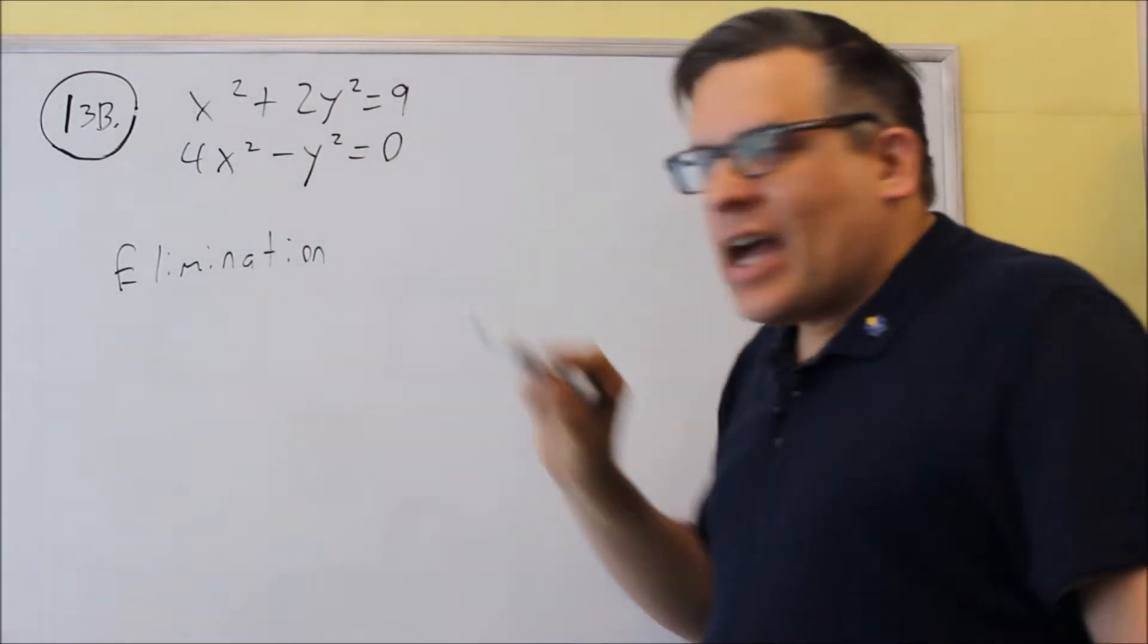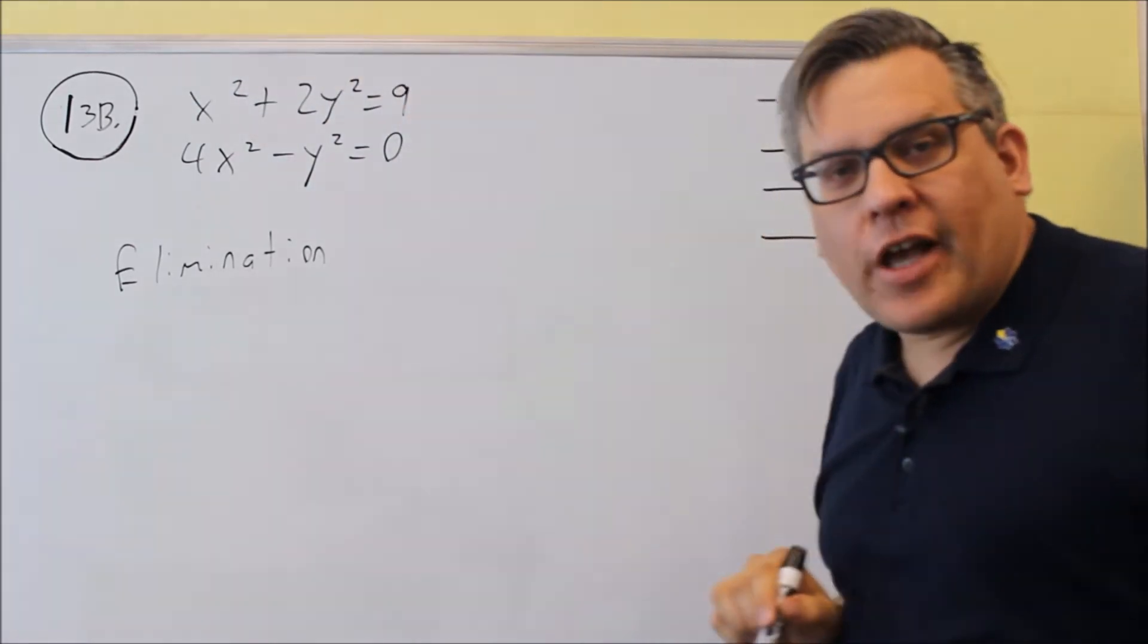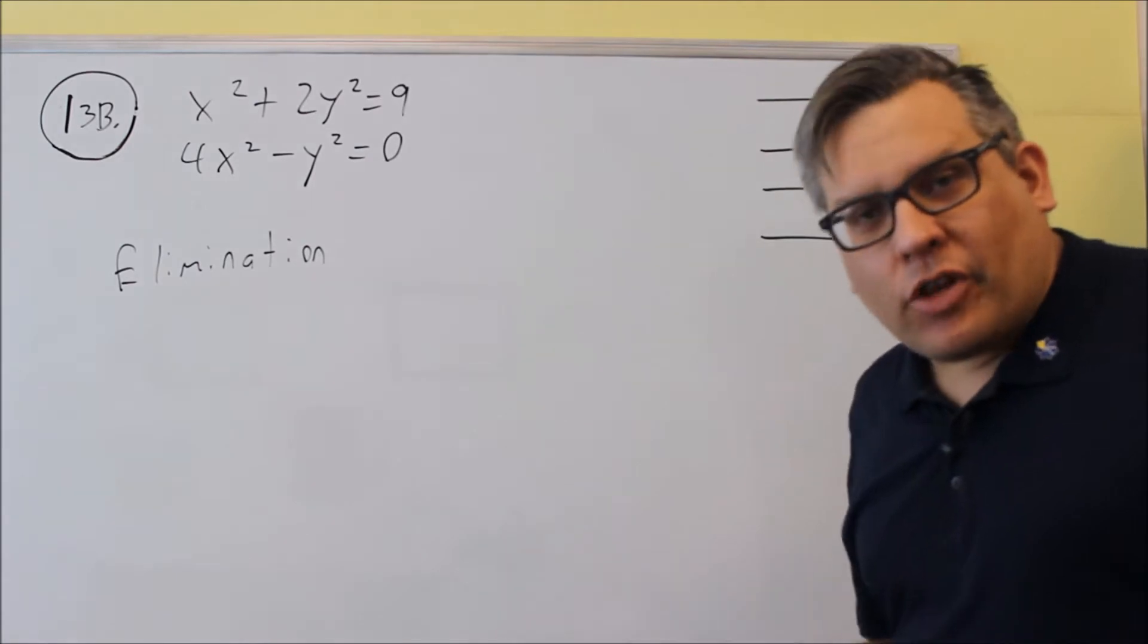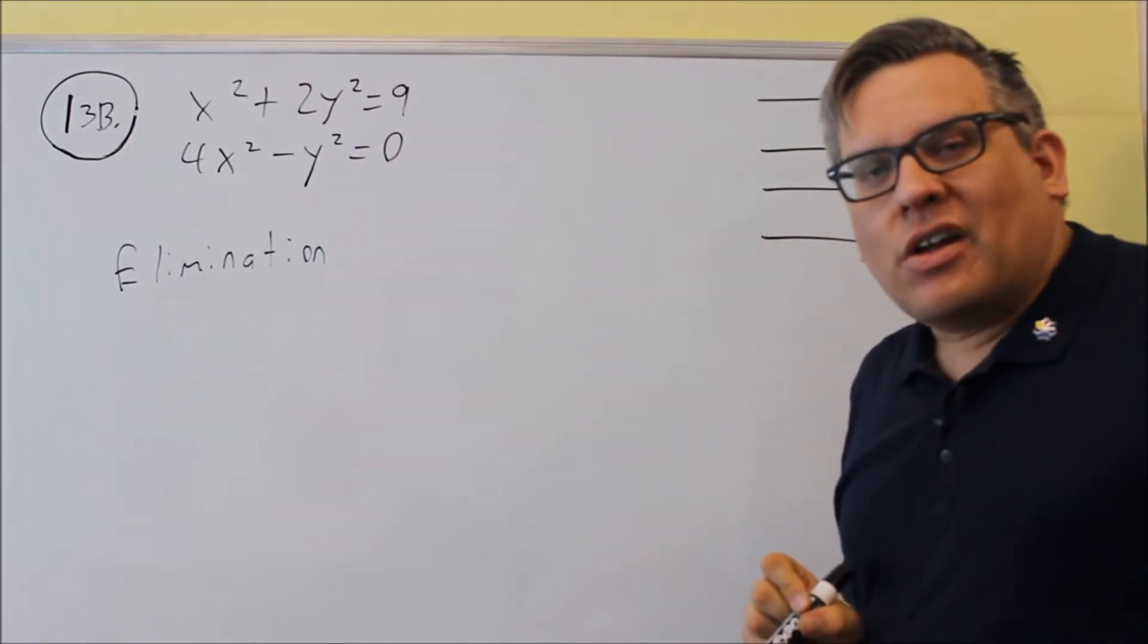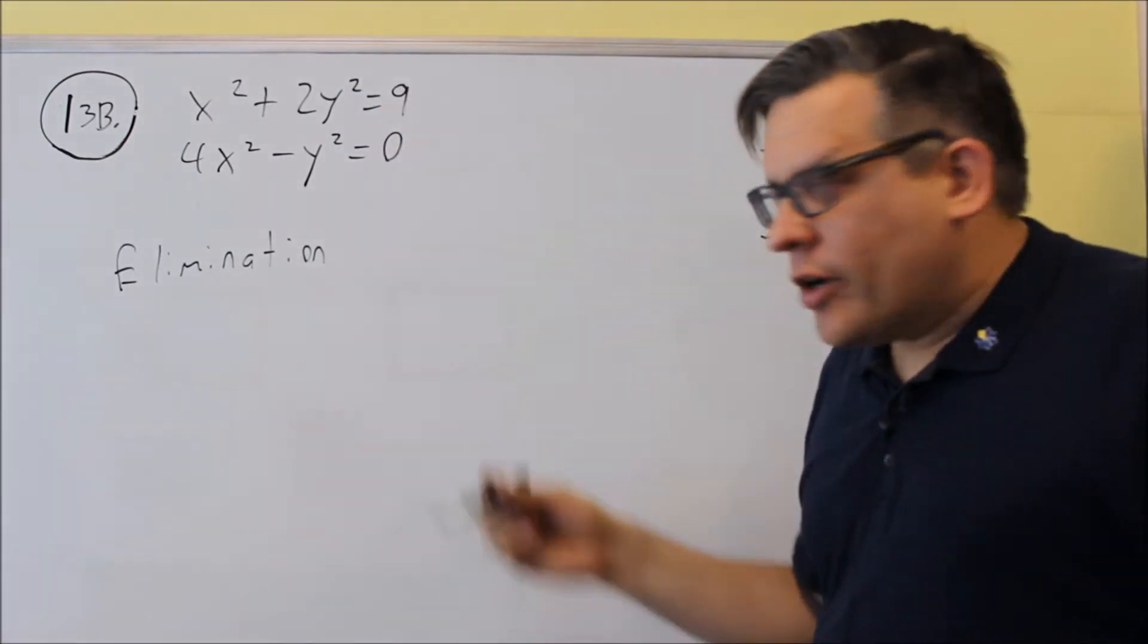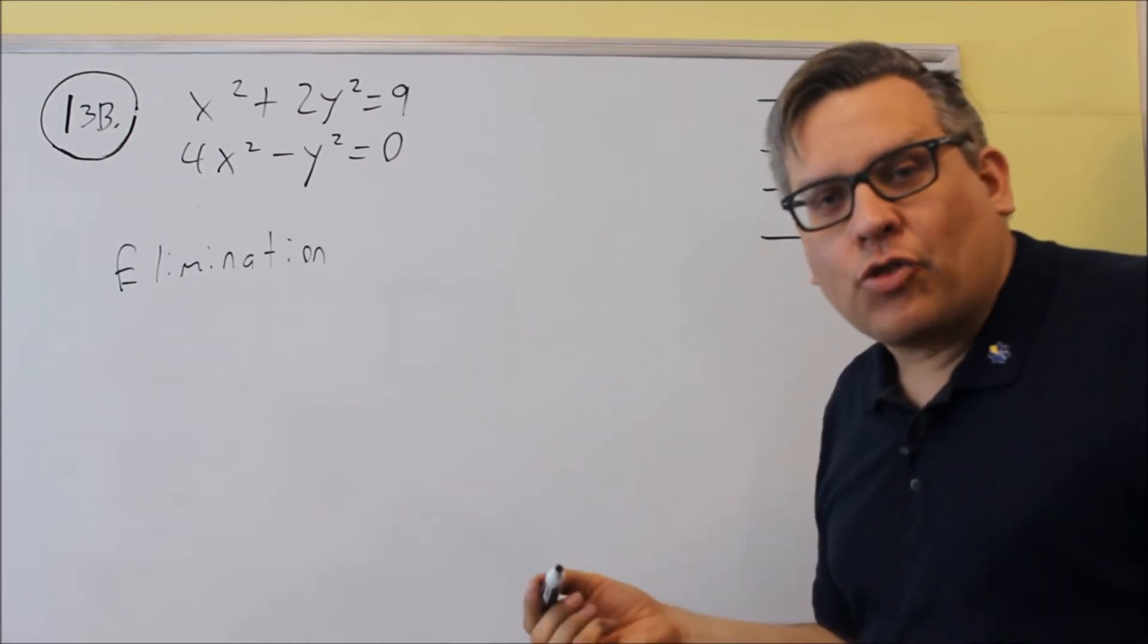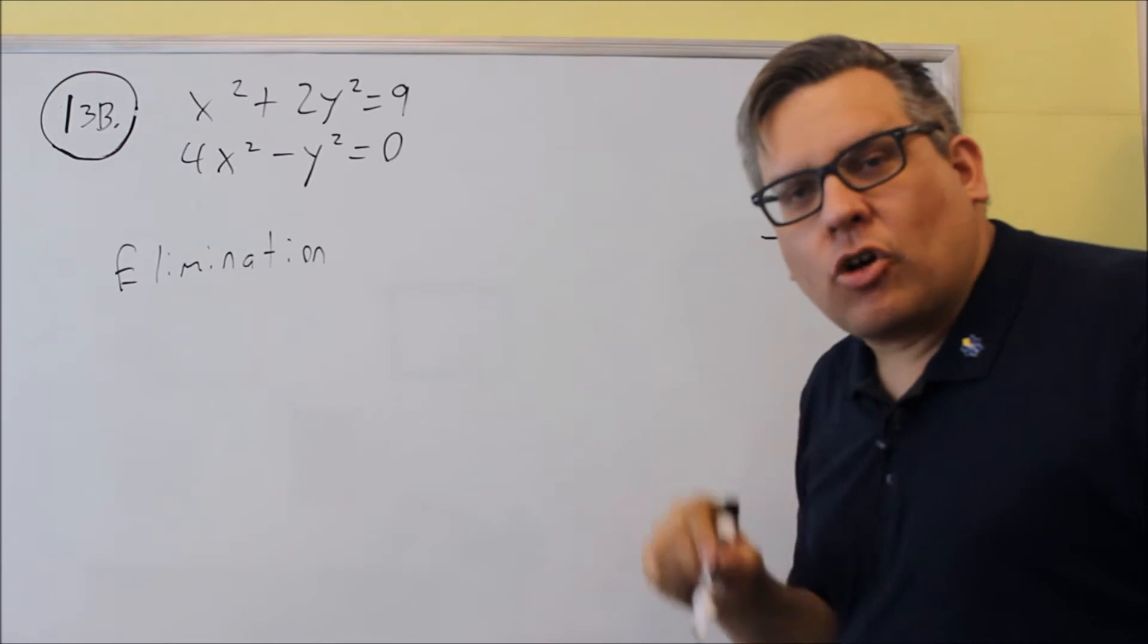If you want to eliminate the x squares, you can multiply top and bottom by negative four. If you want to eliminate the y squares, you can multiply everything by two. You just want to multiply by something so that when you add them together, it's going to cancel out. Now I'm going to choose to eliminate the y squares only because I see a difference in sign here already. That means I don't have to multiply through by a negative. I can just multiply the bottom row by two.